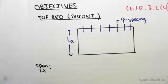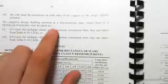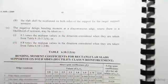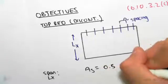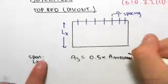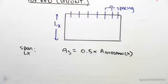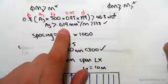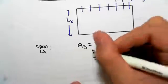We go to our code, section 6.10.3.2 section C, which states that the negative design bending moment at a discontinuous edge where there is a likelihood of restraint is 0.5 times the mid-span value. So the area of steel required equals 0.5 times the area at mid-span in the x direction. From the previous video, the area needed was 619 mm²/m, so we calculate 0.5 × 619, which gives us a value of around 309 mm²/m.